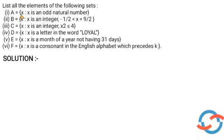A is equal to the set of all x such that x is an odd natural number. The property of A is an odd natural number. Natural numbers are 1, 2, 3, 4, and so on. The odd natural numbers are 1, 3, 5, 7, and so on.